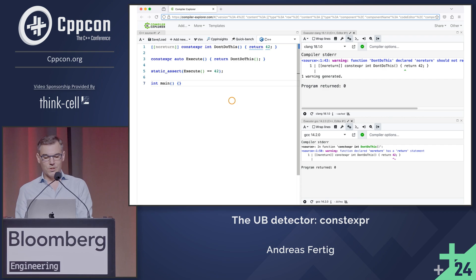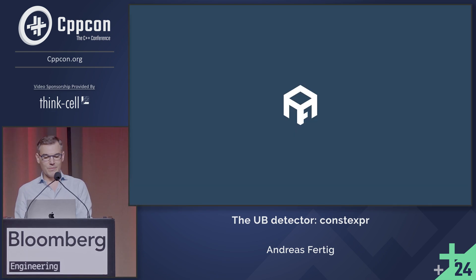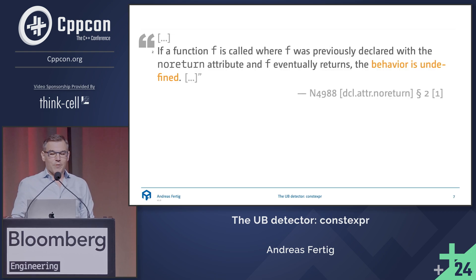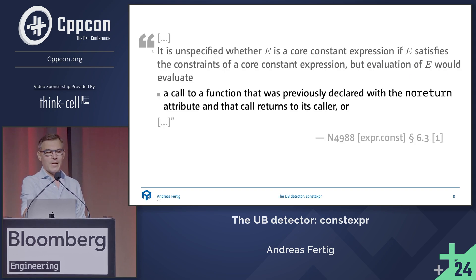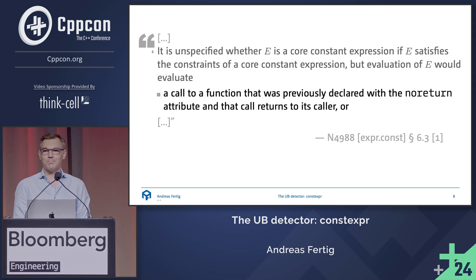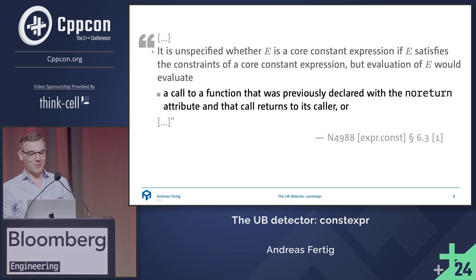The rationale for that in the standard is a little bit more tricky than the previous one. If you look up what the noreturn attribute says, it says: if you return, it's undefined behavior. And then you have to go to constexpr, and that says there is one exception — if it's a noreturn function, the implementation might allow it, which all do. So I didn't make it. Have fun. Thank you.